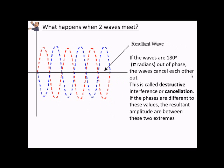The converse is also true. If the waves are pi radians out of phase, they will completely cancel each other out. We call this destructive interference.